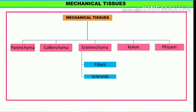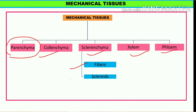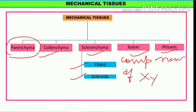Parenchyma cells ko exactly mechanical tissues mein nahin rakha jaata because uska cell wall bahut thick nahin hota hai. Kisi specialized case mein hoga aur jo strength dete hain, woh apni turgidity ki wajah se shape ko define karte hain. Basically jo mechanical tissues hain, they are colenchyma, sclerenchyma, xylem and phloem. Sclerenchyma mein fibers aur sclerids hain jo important mechanical tissues hain. Xylem aur phloem ke andar jo different components hain, woh sabhi mechanical role play karte hain.